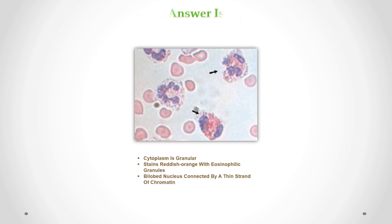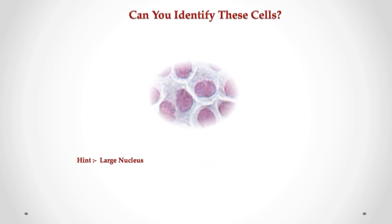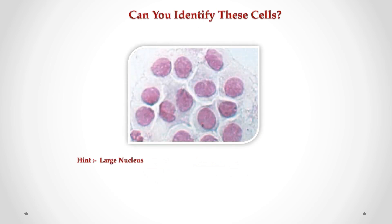Correct answer is eosinophils. We can see granular cytoplasm that stains reddish-orange with eosinophilic granules, and a bilobed nucleus connected by a thin strand of chromatin. Can you identify these cells in CSF?